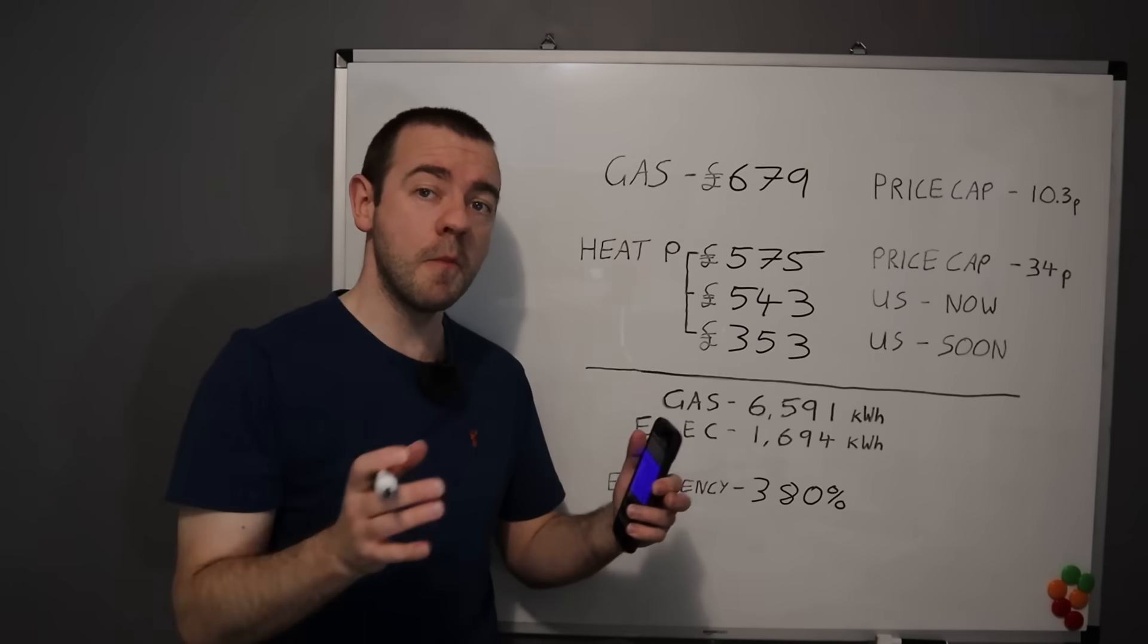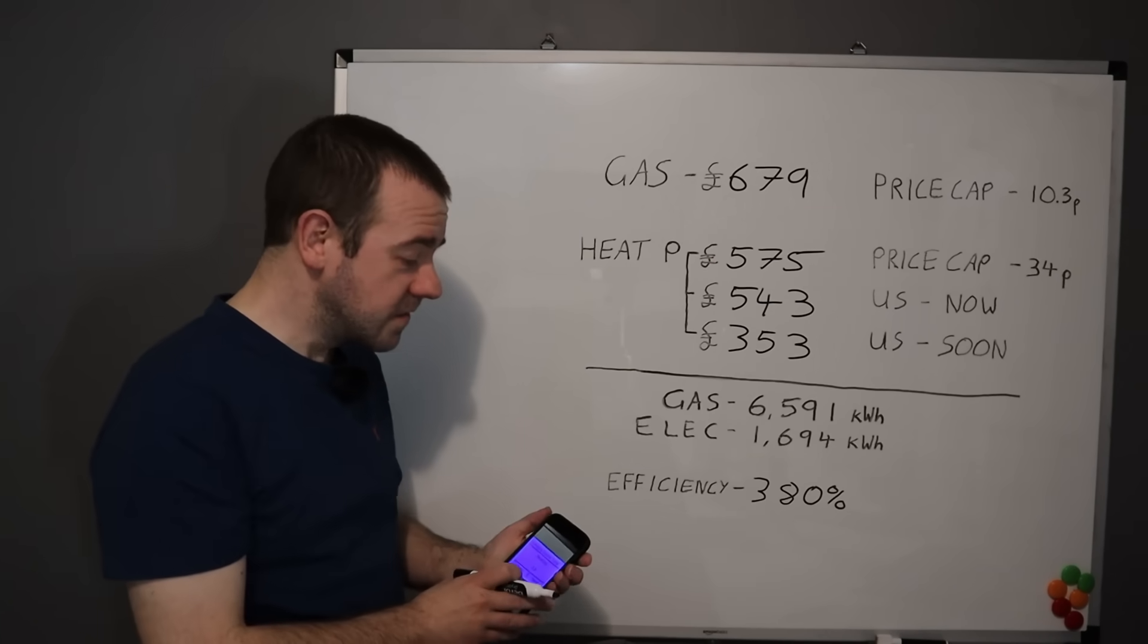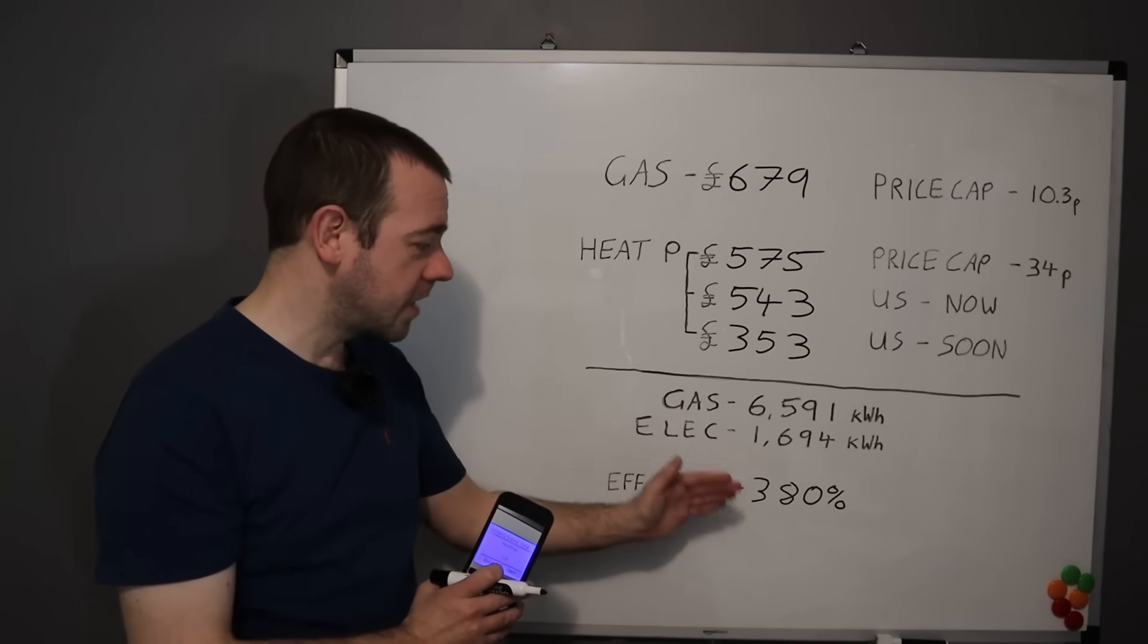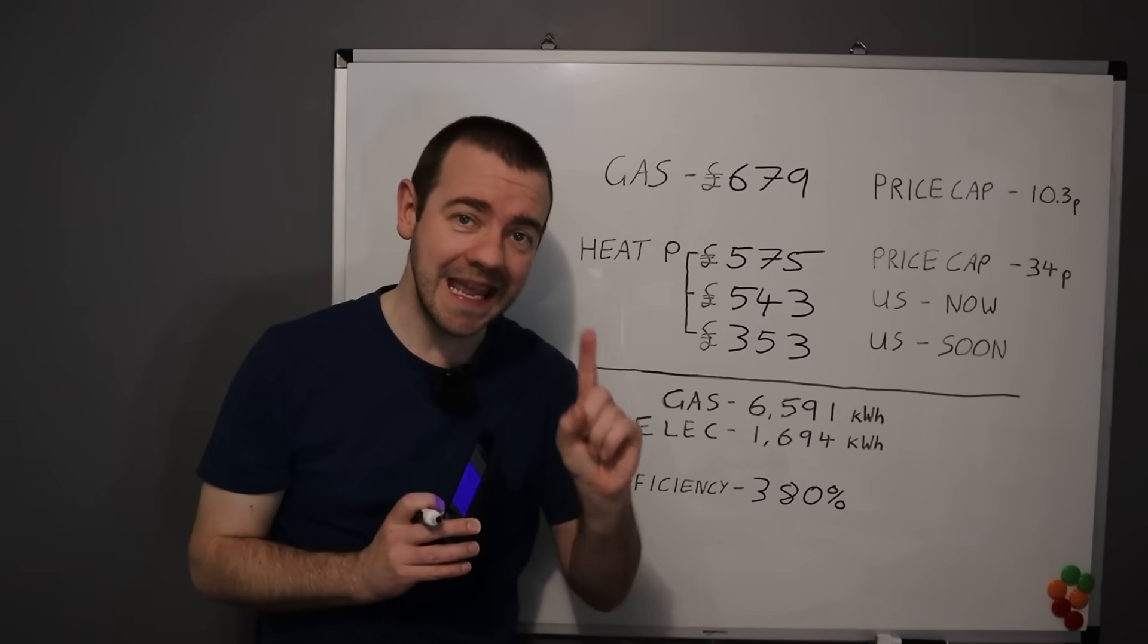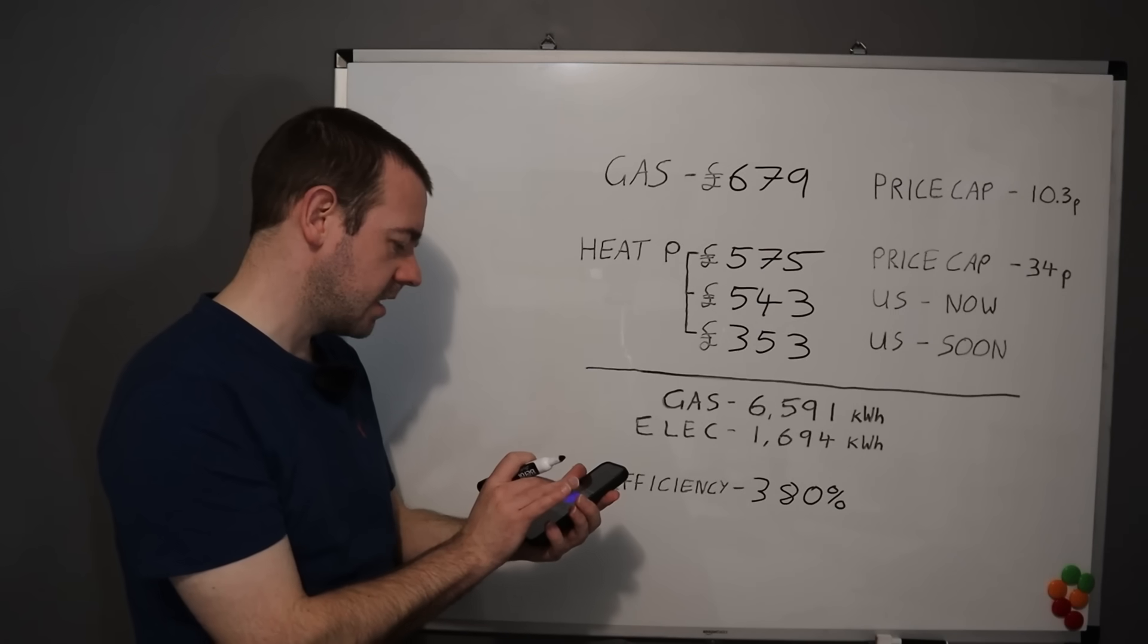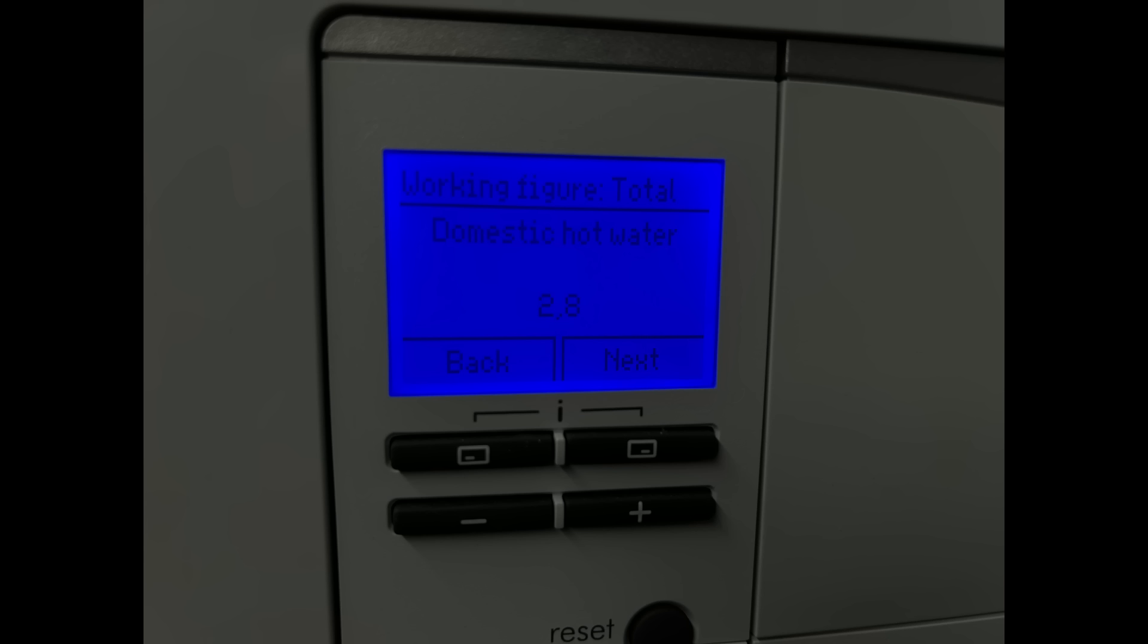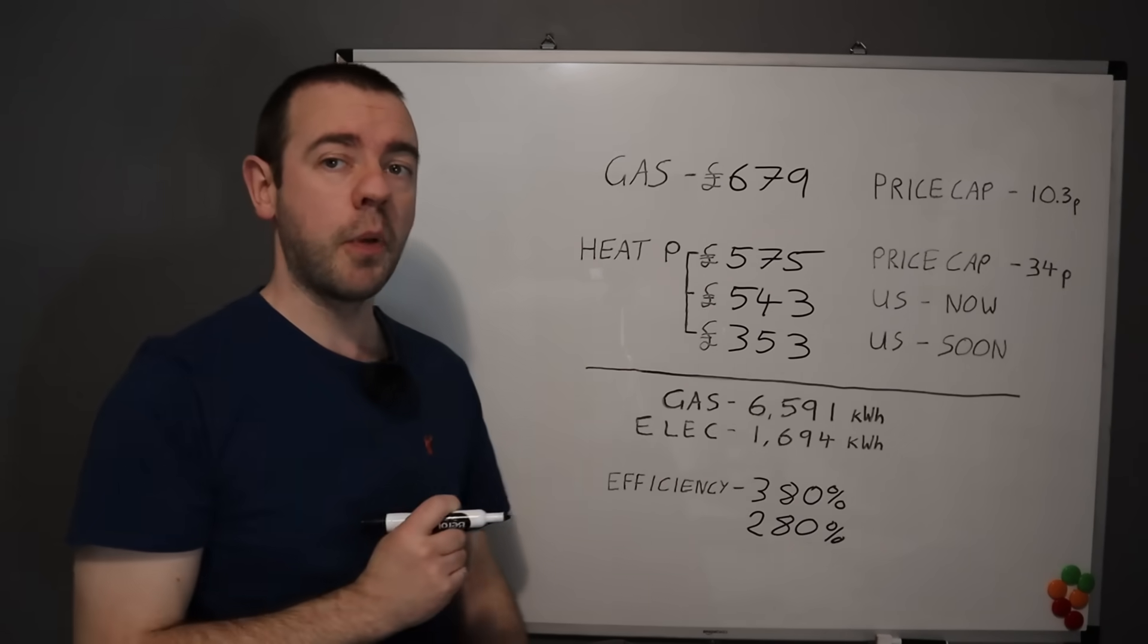We only had to replace a few radiators as the previous video will tell you in terms of went for double panel instead of a single panel, no pipe work was changed. The insulation in the house is identical now with the heat pump and as it was for the previous few years on the with the gas central heating boiler. So we haven't uber insulated the house. You don't need to, it just helps regardless of what you're heating your house with. It helps.